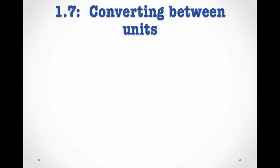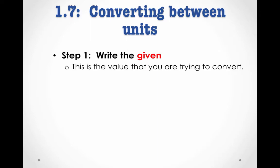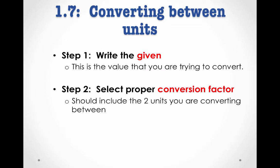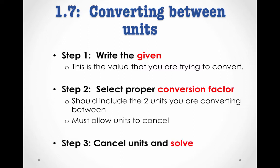So there's a three-step process for converting between units. First, we write the given, which is the value you're trying to convert. Then we select the proper conversion factor. These should include the two units that you're converting between. So in other words, if you're trying to convert from grams to kilograms, your conversion factor should include grams and kilograms. And it must allow your units to cancel. More on this in the next slide. And finally, you cancel your units and do the math. So you might want to pause the video here and write down these steps before moving on.